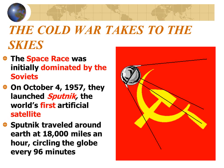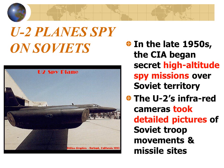The Cold War took to the skies. The space race was initially dominated by the Soviets, who in 1957 launched Sputnik, the world's first artificial satellite, traveling around the Earth at 18,000 miles an hour and circling the globe every 96 minutes. In the late 1950s, the CIA began high-altitude U-2 spy missions over Soviet territories. The U-2's infrared cameras took pictures of Soviet troop movements and missile sites, designed to intimidate the Soviets by invading their national sovereignty with a plane they could not stop — which is, of course, a violation of international law.